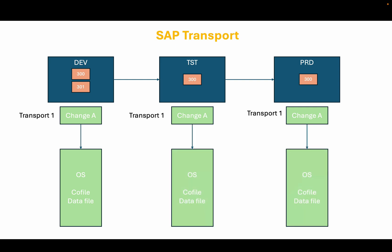When the changes are moved from one SAP system to another, the co-files and the data files associated to those transports are also moved to the respective SAP system at the operating system level.